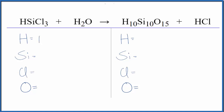On the reactant side, we have one hydrogen plus these two hydrogens, so we have three hydrogen atoms, one Si, three chlorines, and one oxygen. On the product side, we have ten hydrogens, and don't forget this one out here, so we have eleven. Ten silicon atoms, one chlorine, and fifteen oxygens.